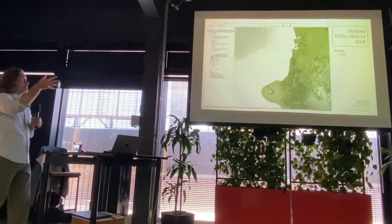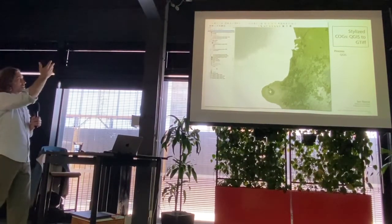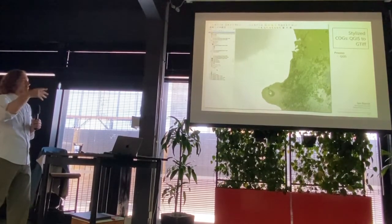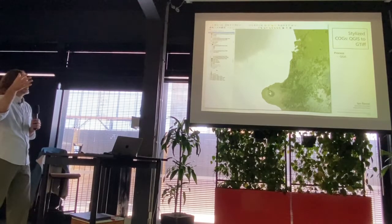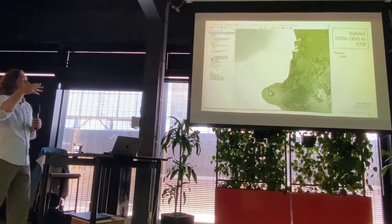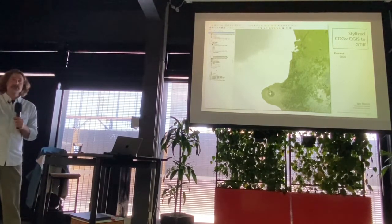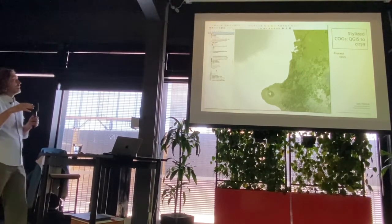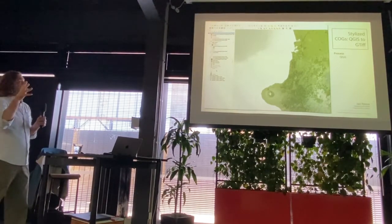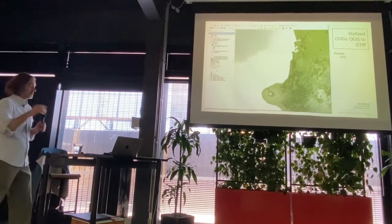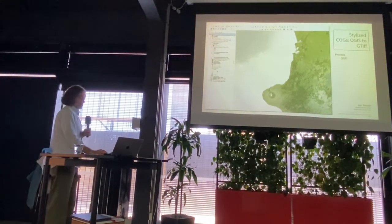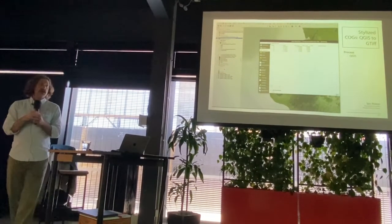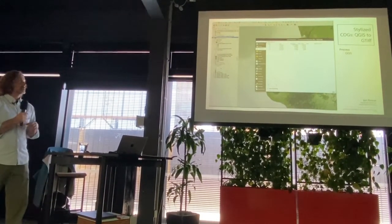A little more in depth: build a QGIS project. This is the QGIS project for the image you were seeing — it has all the colors set, all my gradients set for my rasters. I'm using five or six different rasters in there, which you wouldn't be able to do with a vector tile setup. Build your project, make it look nice, do all the things that you want to do.